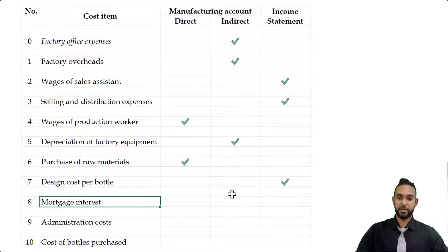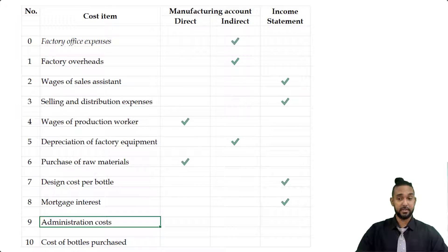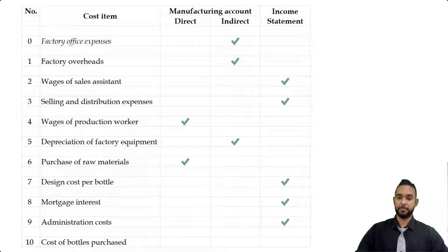Next we have mortgage interest — that's not manufacturing, so we'll put it in the income statement. Administration costs — again, non-manufacturing, so income statement. And then cost of bottles purchased.